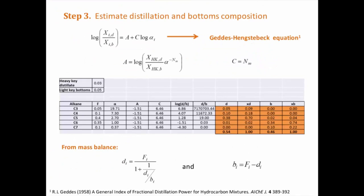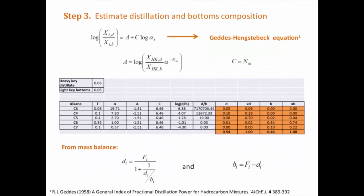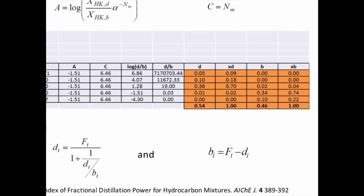With the Geddes-Hengestebeck equation, we can determine the composition of the distillate and the bottom product. First, the parameter A is determined with the heavy key composition in the distillate product, the light key composition in the bottom product, the relative volatility of the component and the minimum number of stages. Then, the ratio between the top and bottom compositions is determined with the Geddes-Hengestebeck equation. Then, from a mass balance, the top and bottom compositions can be found using that ratio.